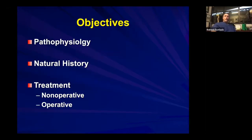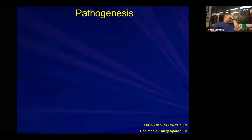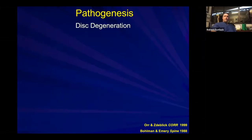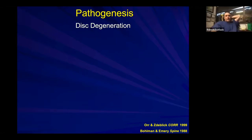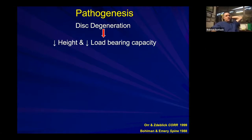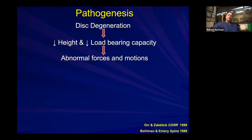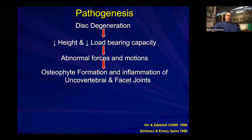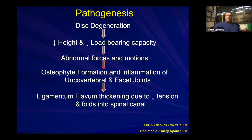It's worth diving into the substrate a little bit to understand what's going on and what to expect clinically. On a basic level, there's a sequence of disc degeneration which decreases height and diminishes load-bearing capacity. This leads to abnormal forces and motions in the involved segment as well as adjacent segments. Ultimately you get reactive osteophyte formation, inflammation in the uncovertebral joints — which are often overlooked — as well as the facet joints.